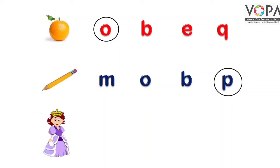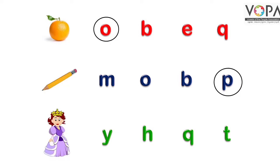अगली picture है Q for Queen की। इसके आगे letters हैं: Y for Yak, H for Hen, Q for Queen, और T for Tiger। हमें पता है बच्चो, Queen यानि रानी की शुरूआत Q से होती है, तो हम लोग यहाँ Q को encircle करेंगे।